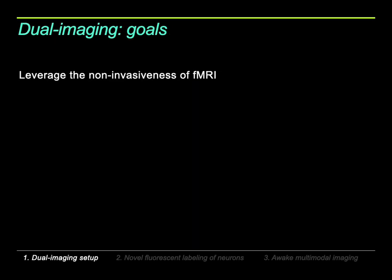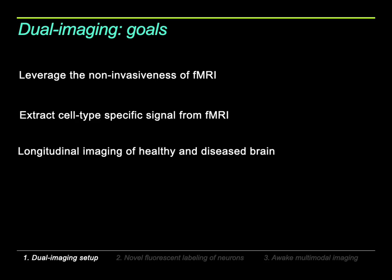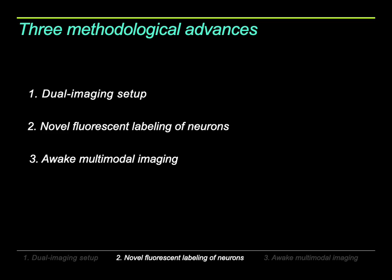With this dual imaging system, we can really leverage the non-invasiveness of fMRI. At the same time, because we use GCaMP expressed in a specific cell population, we can extract meaningful, cell-specific signal from the calcium imaging side. We can apply this longitudinally on animals that can have the implant permanently on the cortex for their entire life.